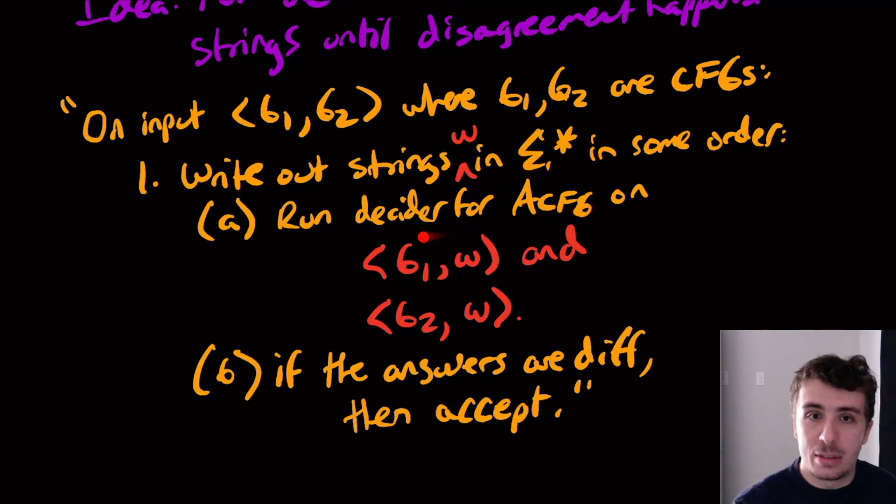And we have done that. There is a decider for the acceptance problem. So this step right here, this A step only takes a finite amount of time. And therefore, we can claim that EQ_CFG complement is recognizable.